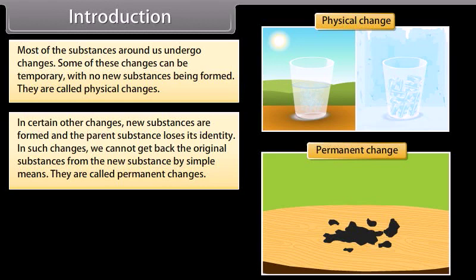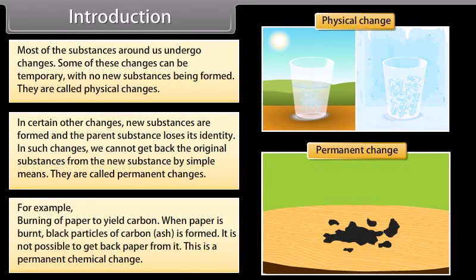For example, burning of paper to yield carbon. When paper is burnt, black particles of carbon ash is formed. Now it is not possible to get back paper from it. This is a permanent chemical change.